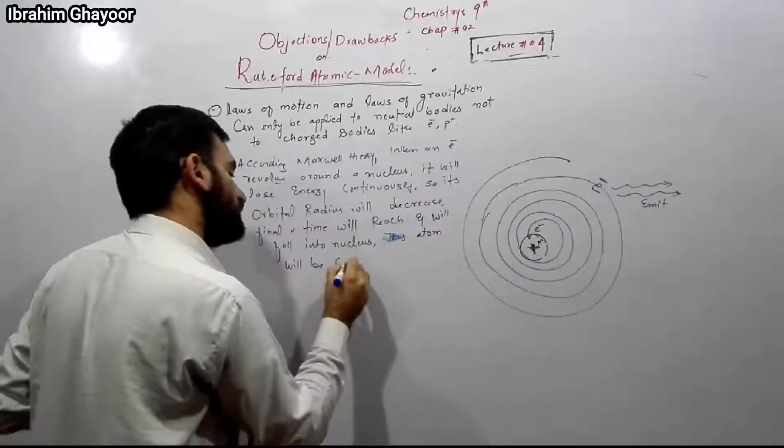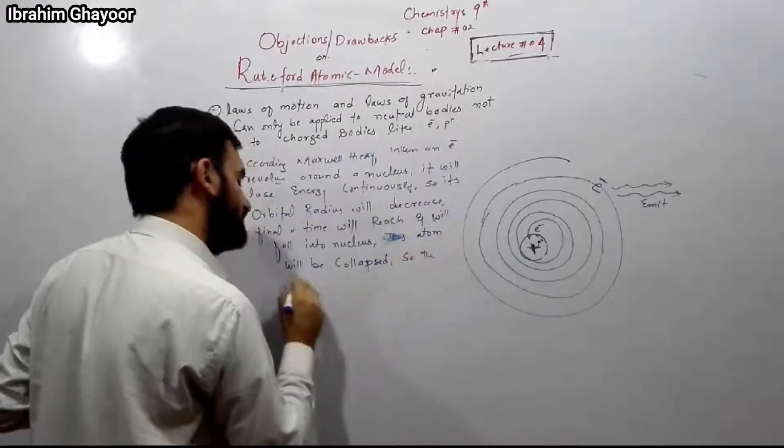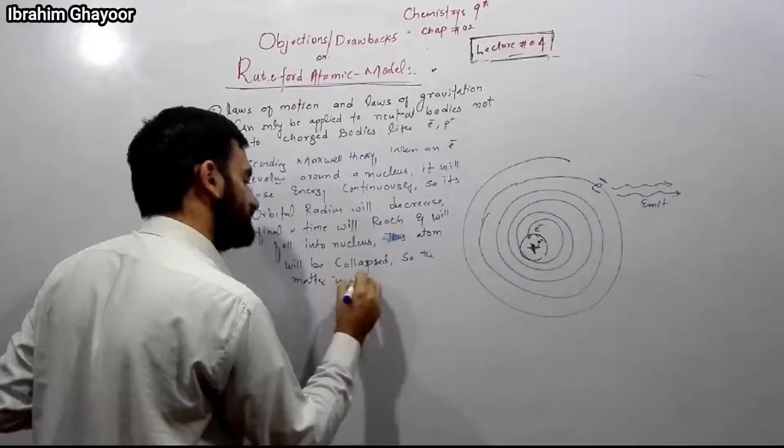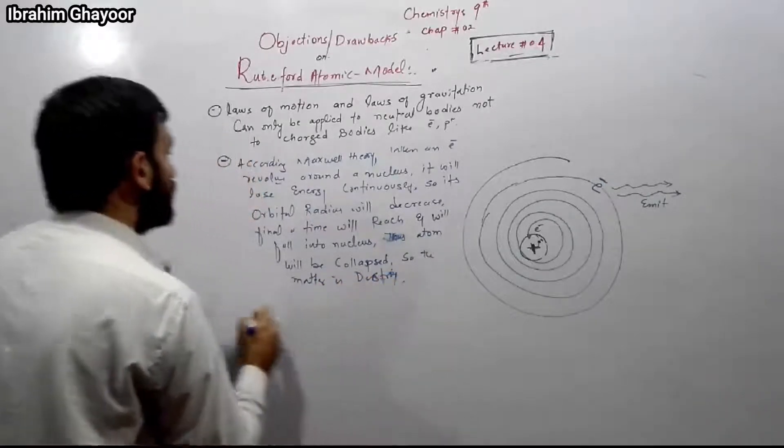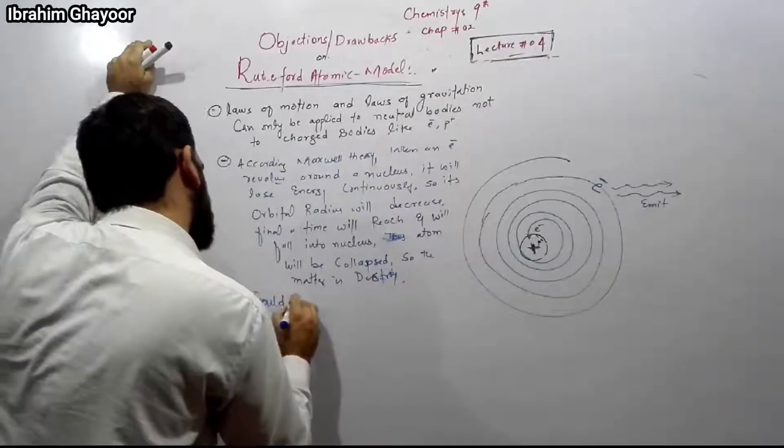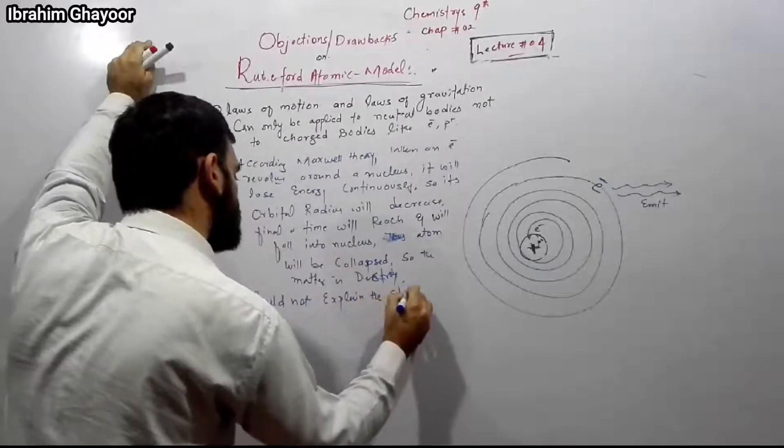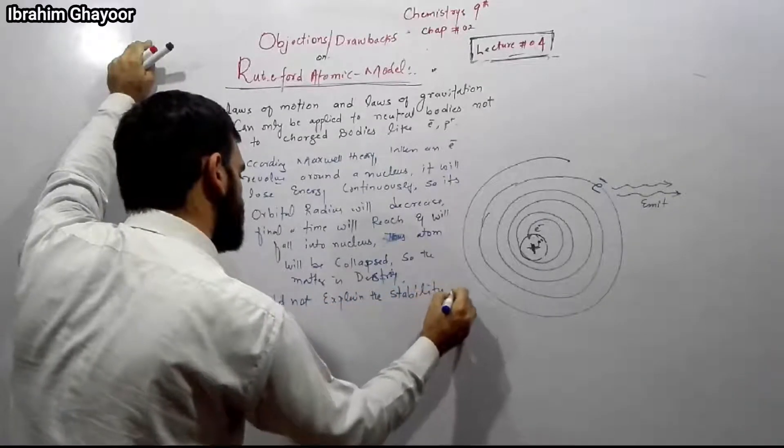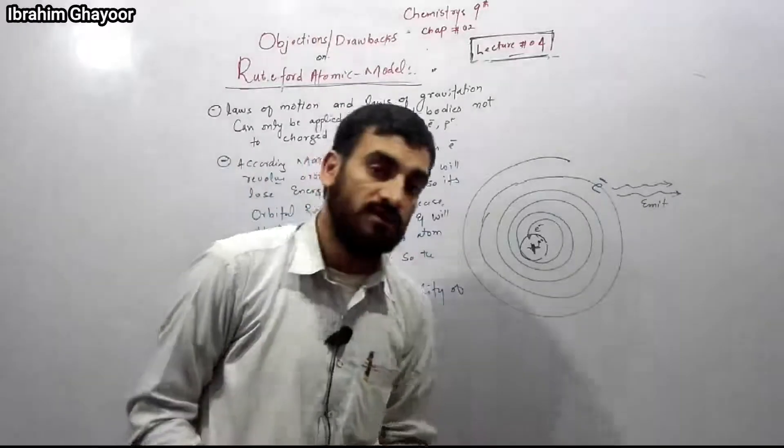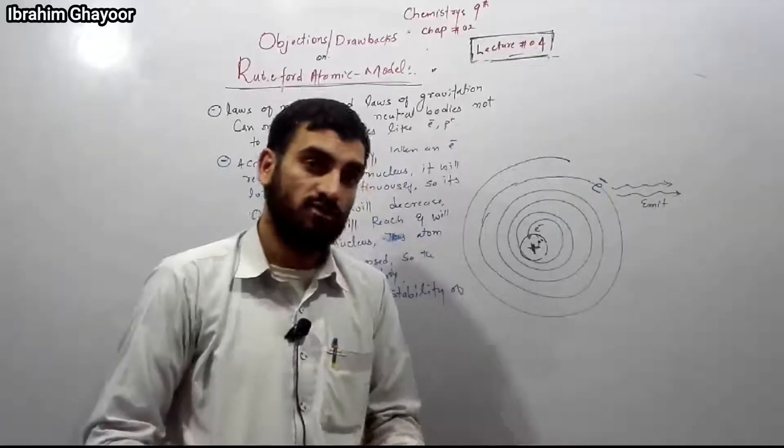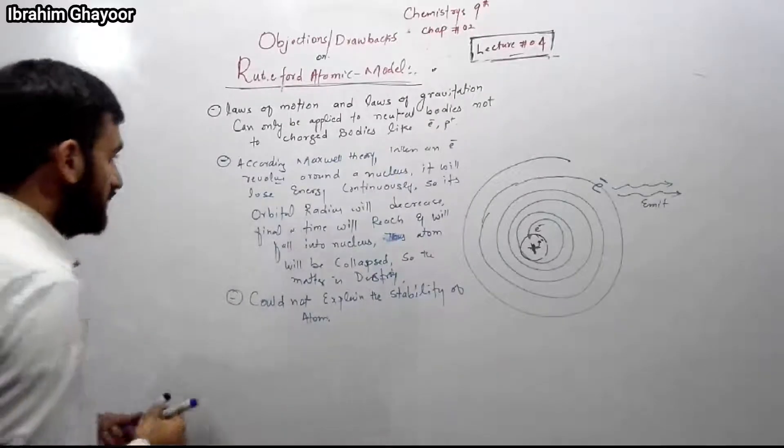The atom will collapse and be destroyed. The whole matter will be destroyed. But we know this doesn't happen. So Rutherford could not explain the stability of the atom. He could not explain why the electron doesn't lose energy and why the atom remains stable.